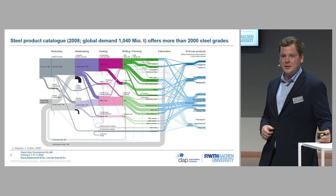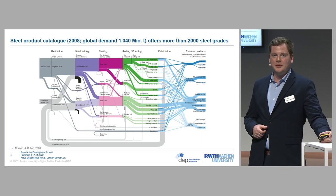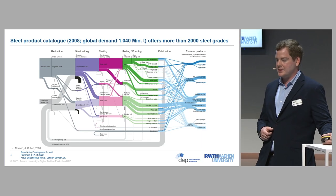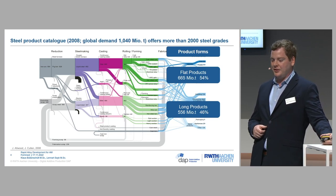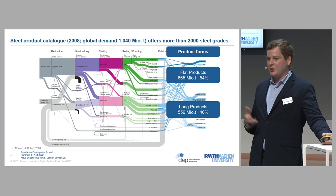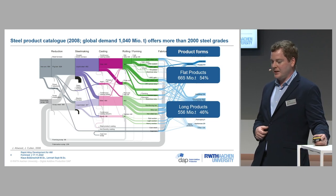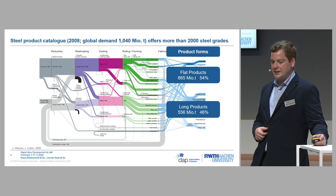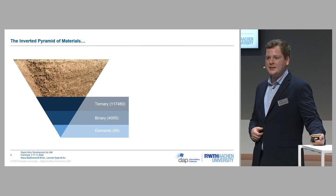Looking at global steel production — in 2008 there was a global demand of one billion tons and more than 2,000 different steel grades. 54 percent of these steel grades are flat products and 46 percent are long products. Where is the powder for additive manufacturing? By now powder production has increased, but the share of powder in worldwide steel production is only at one percent. We need a lot more powder production for additive manufacturing.